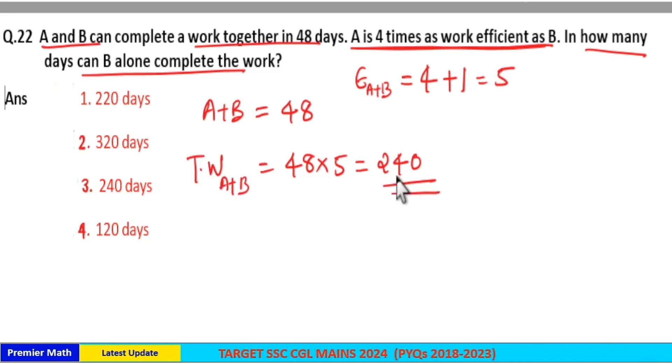Then here if B alone works, B alone has to complete this 240 units of work in 240 days. Option 3 is your answer because B's efficiency is 1 unit. Efficiency of B is 1 unit means time taken by B to complete the work is equal to 240 days.